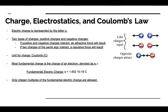Only integer multiples of the fundamental electric charge are allowed. Everything in the universe is made of protons, electrons, and neutrons. Neutrons have zero charge, electrons have a charge of −e, and protons have a charge of +e. Since everything is made up of these particles, the charge that any object has must be an integer multiple of the fundamental electric charge e.